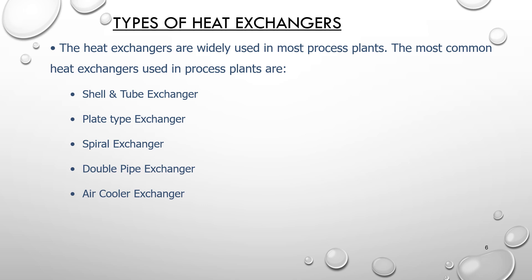Now, types of heat exchangers. The heat exchangers most widely used in process plants like refineries, chemical plants, petrochemical plants, and oil and gas industries are: shell and tube heat exchangers, plate type exchangers, spiral exchangers, double pipe exchangers, and air cooled heat exchangers. Shell and tube heat exchangers are elongated steel cylindrical vessels containing bundles of parallel tubes. Liquid passes through the inside of the shell and over the exterior side of the tubes, causing exchange of heat between the two liquids.